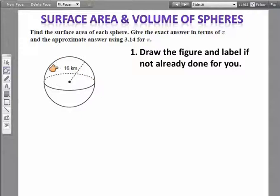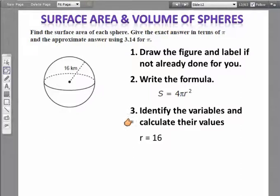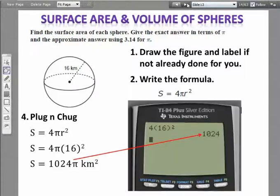Next, I'm going to have this sphere that has a radius of 16. There's my formula. I identify my variable is 16 for my radius. I'm going to plug it in: 4π(16)².